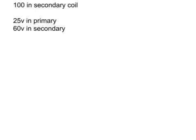The voltage in the primary is 25 volts and the voltage in the secondary is 60 volts. What I want you to do is calculate how many turns in the primary coil.